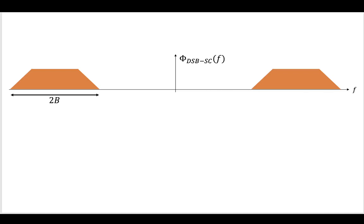First, we had the DSBSC modulation. This was the first type of modulation we discussed. And this was not an efficient method of modulation. We had to use a 2B amount of bandwidth when we did the modulation this way.